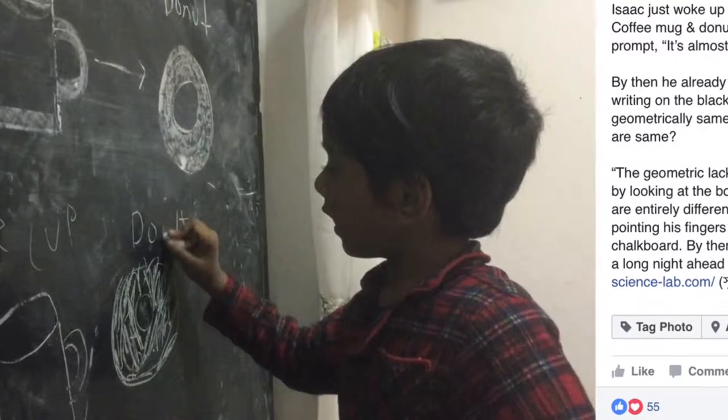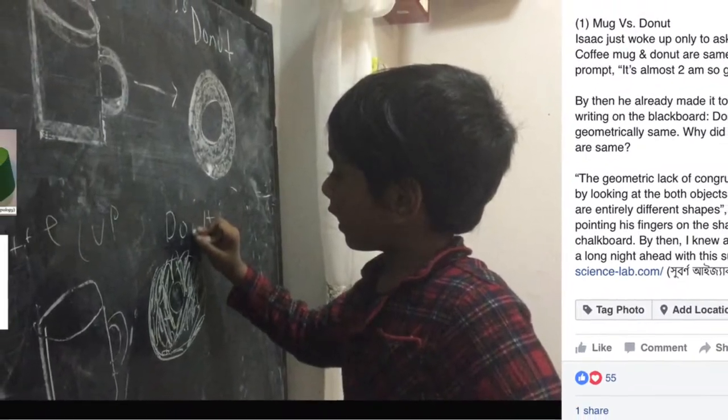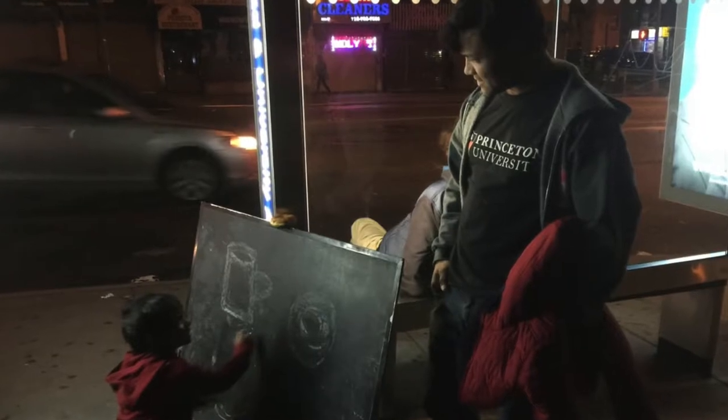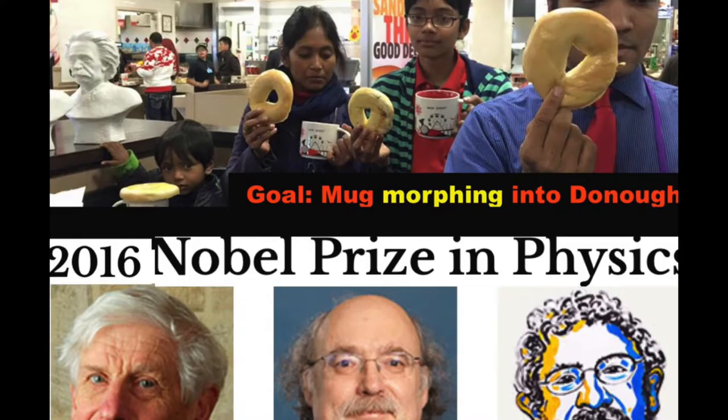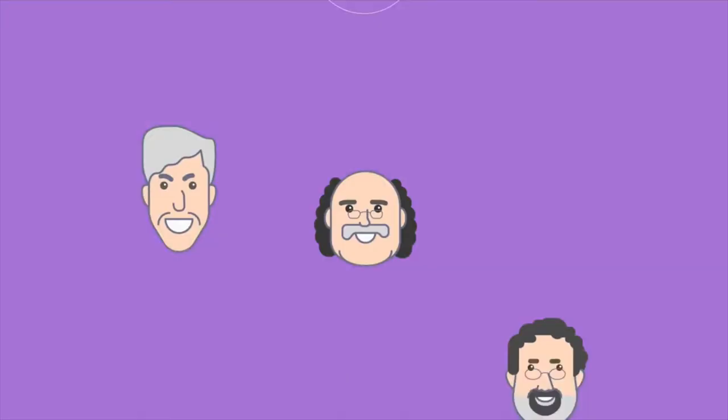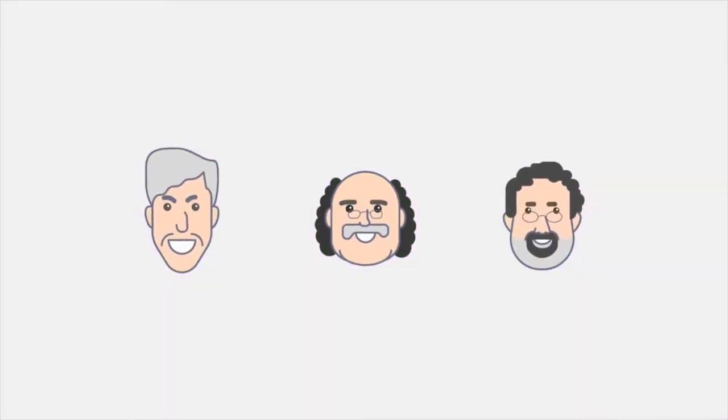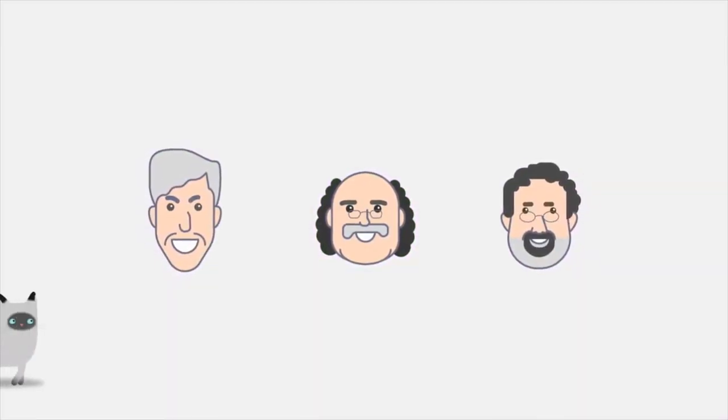Topology was originally studied as a branch of purely abstract mathematics, thanks to the pioneering work of Poincaré, Hausdorff, and Cantor. We now know it can be used to understand the riddles of nature.